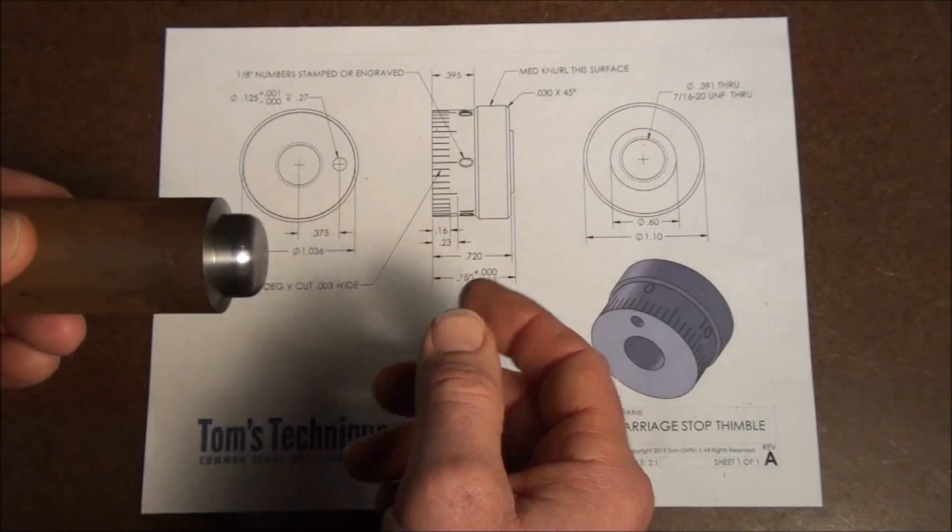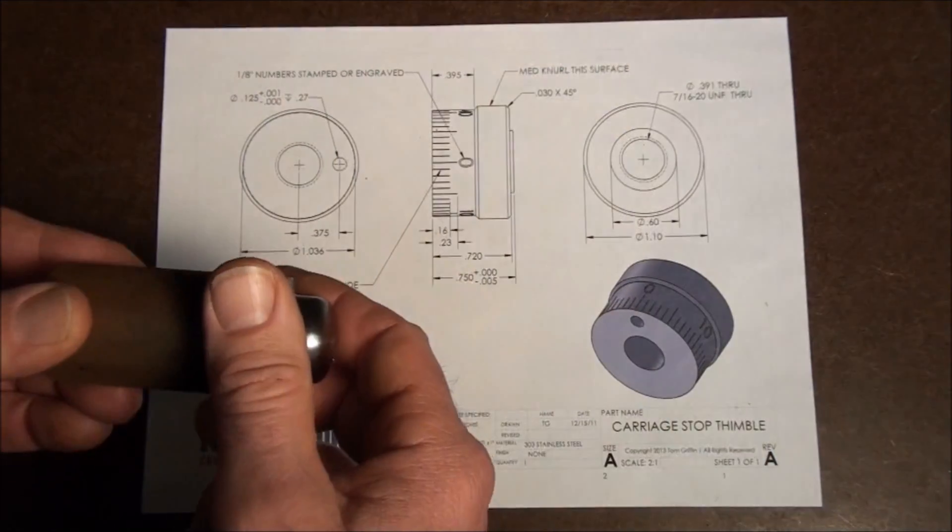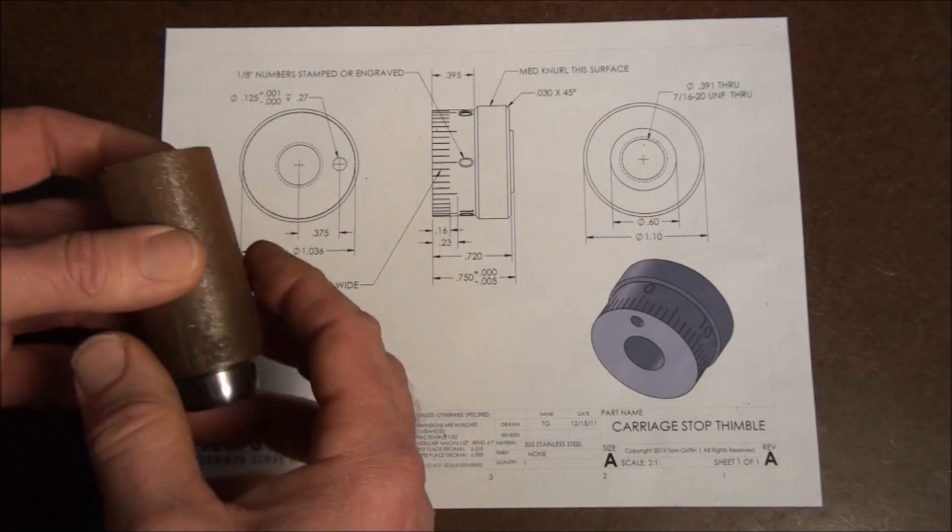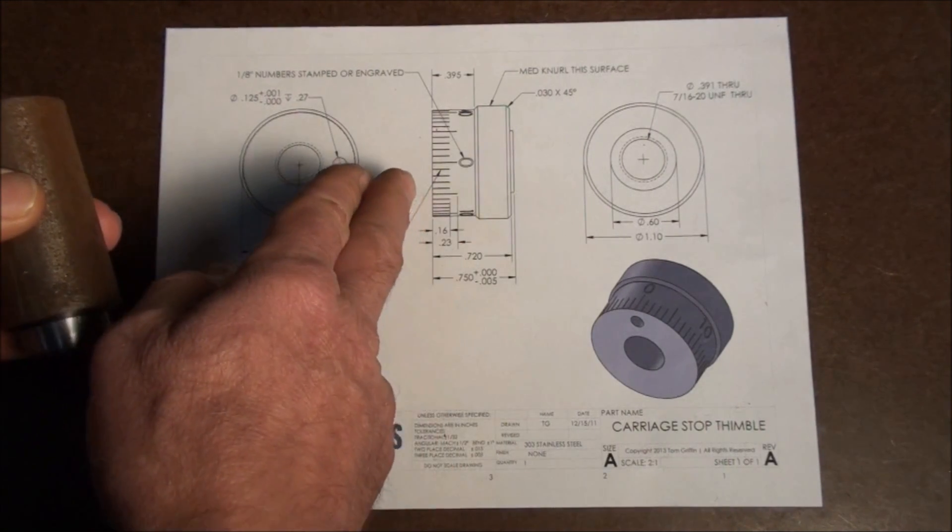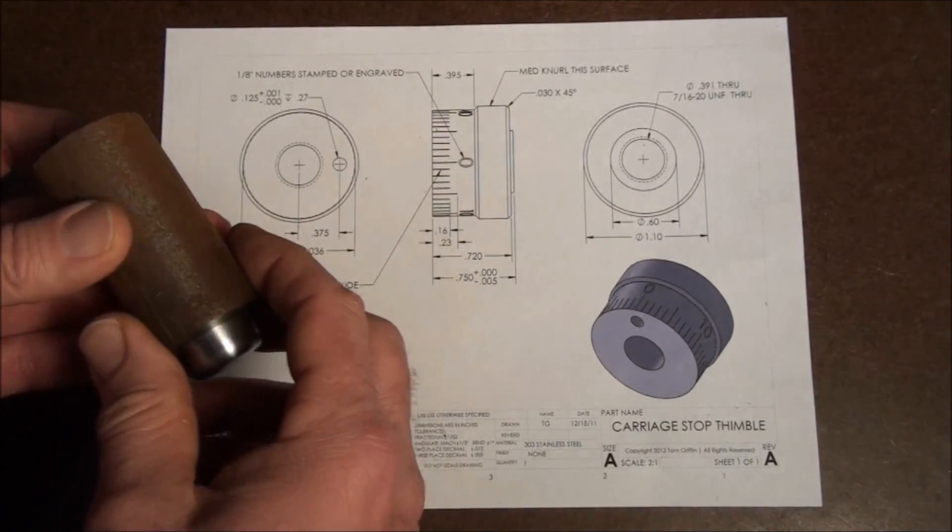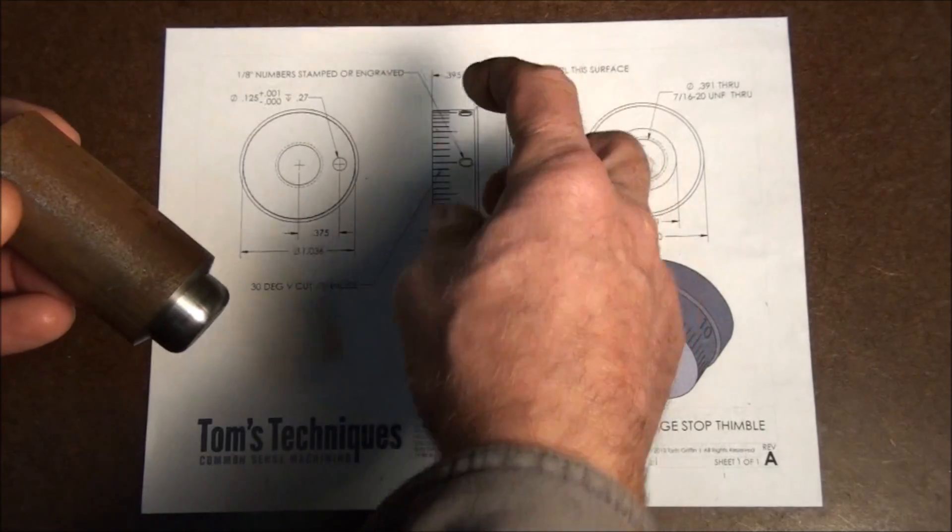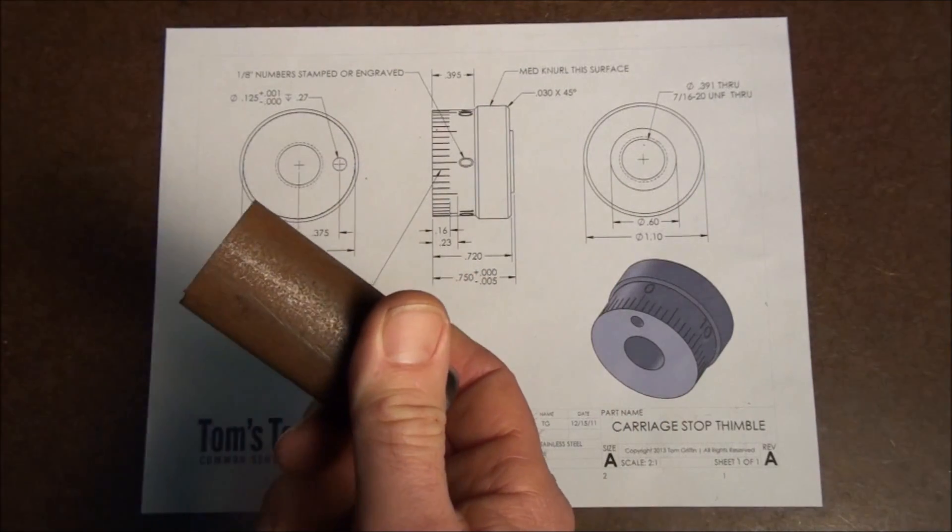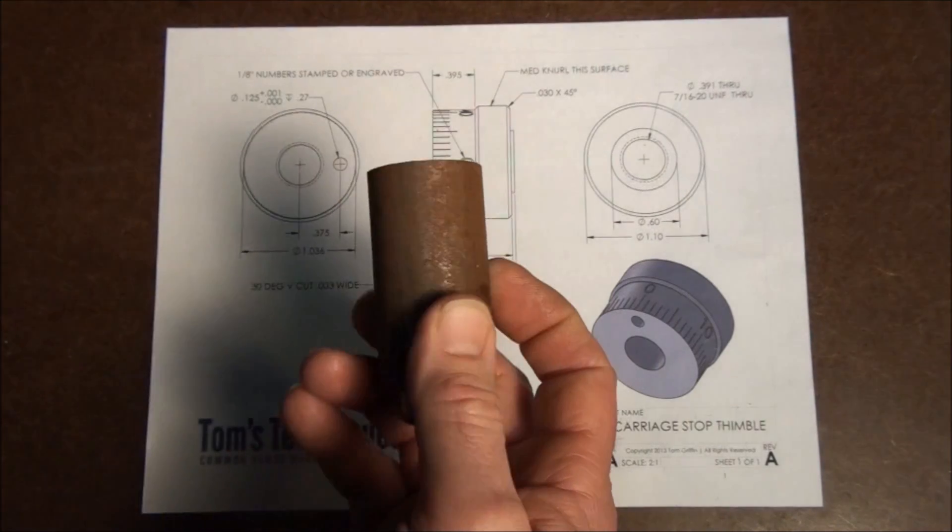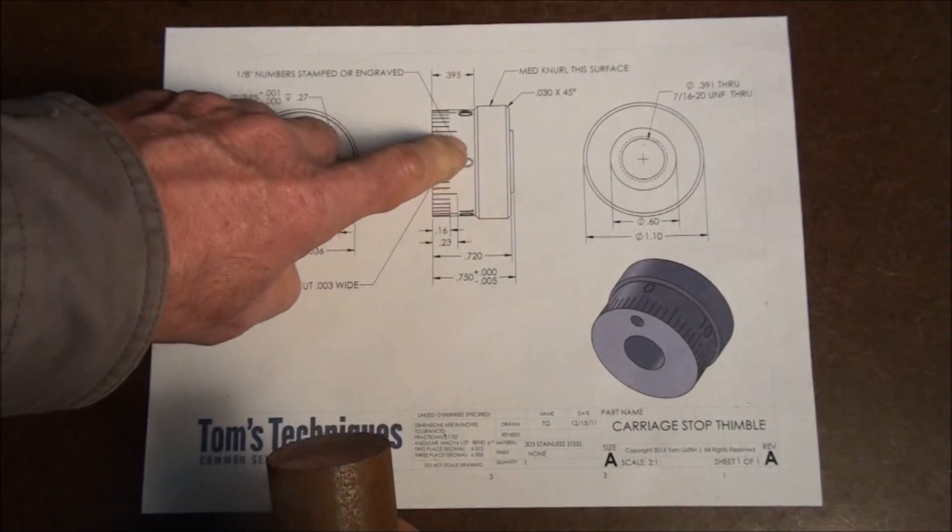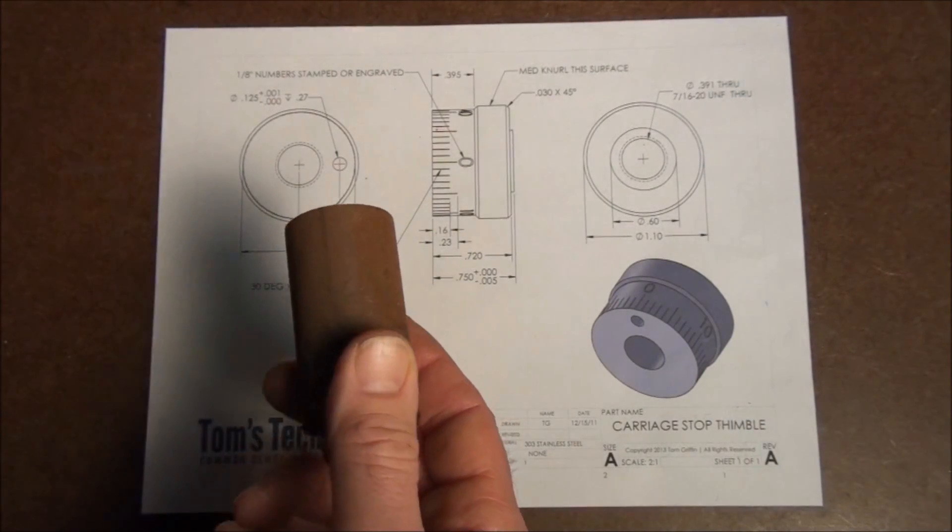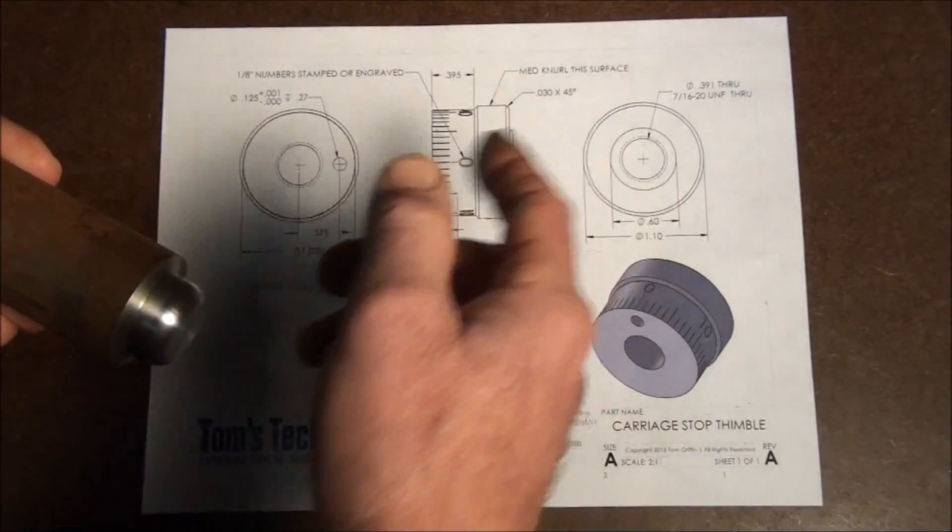And the reason why is that we have to have some way to hold on to this part to engrave the divisions and also stamp the numbers. We can't hold on to the knurl section because that's not an accurate surface anymore. Once you knurl it, you can no longer fixture off that. Can't hold on this surface because that's where we're doing all the machining. So the only thing left to do really is to hold on to the bore.